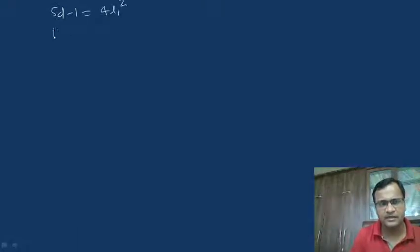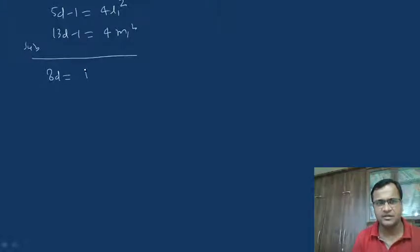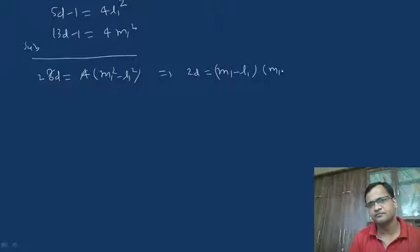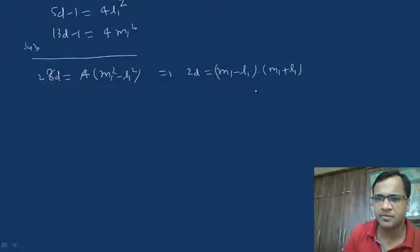Substituting: 5d − 1 = 4l₁² and 13d − 1 = 4m₁². Subtracting these two equations: 13d − 5d = 8d equals 4(m₁² − l₁²). Dividing both sides by 4 gives 2d = (m₁ − l₁)(m₁ + l₁).